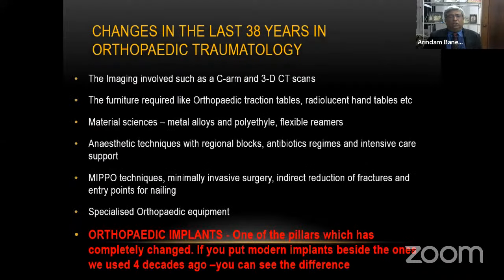In addition, many of our tools have changed, like the usage of the C-arm, the advent of the 3D CT scans, the furniture we require while doing an operation, an orthopedic traction table, radiolucent hand tables, etc. Material sciences have also changed along with it — the metal alloys we use, the polyethylene, the flexible reamers.